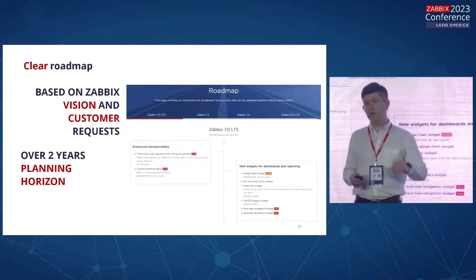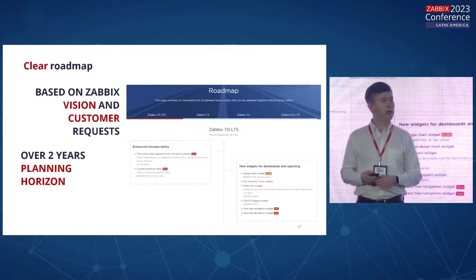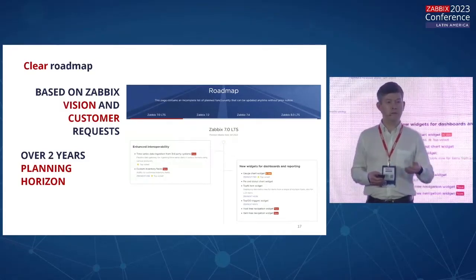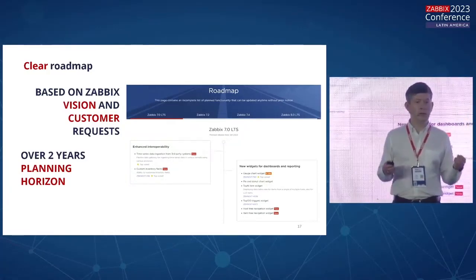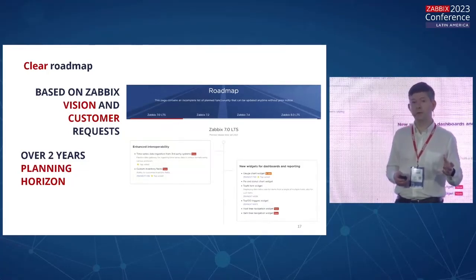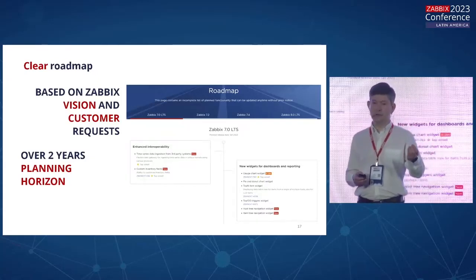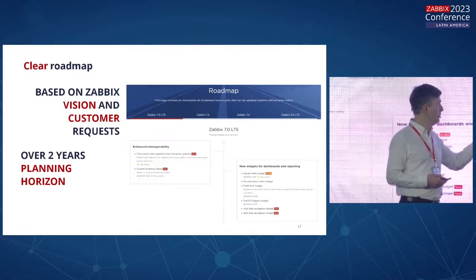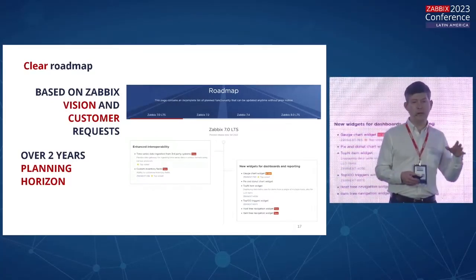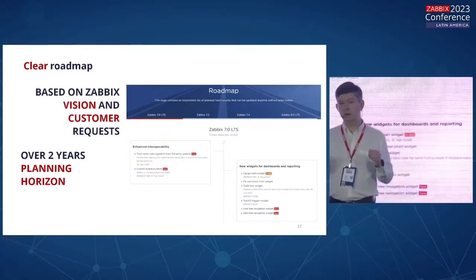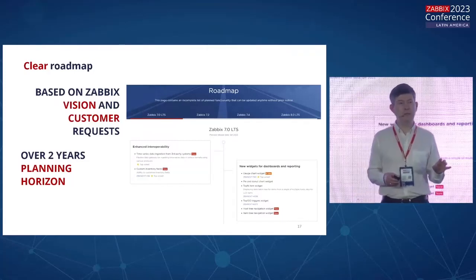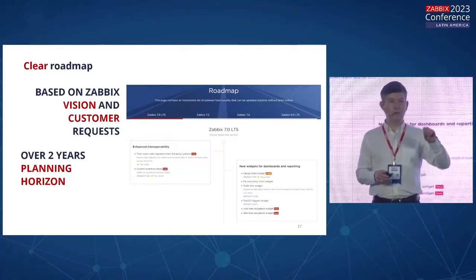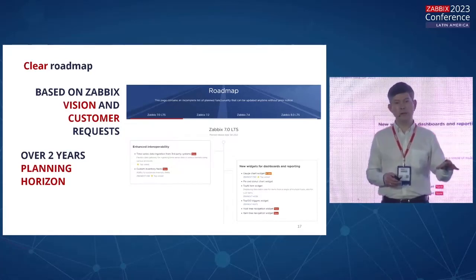The roadmap consists of strategic features and top-voted features — for example, load balancing and high availability for proxies, one of the top-voted features by the Zabbix community, or support for custom inventory fields, another top-voted community feature. That's the reason we include them in the roadmap. At this moment we have over two years of planning horizon, which currently covers the next major release and one after that.